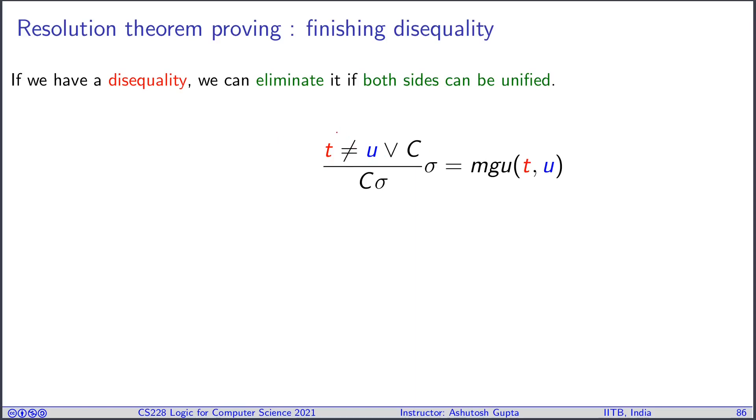Suppose you have a clause like disequality or some other thing. Then what I can do is find if they can unify, T and U. Under that unification, I can remove this disequality because once you unify them, they become equal. Because of the reflex rule, you can say that this is not true. So you can just get rid of this literal, and you'll be left with C sigma. Fairly obvious. This is called reflexivity.